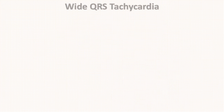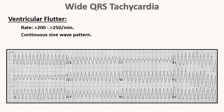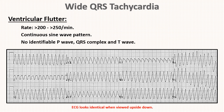Next is ventricular flutter, where rate is usually more than 200-250 per minute. On ECG, you can observe a continuous sine wave pattern. One cannot identify P waves, QRS complex, or T waves. A useful clinical tip: the ECG looks identical when viewed upside down in ventricular flutter.